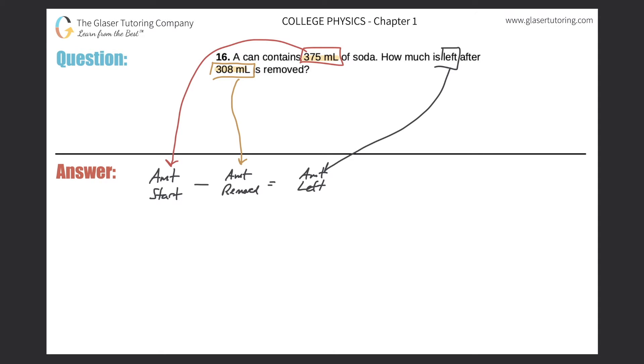So that's the question we're trying to solve. Let's plug in the numbers: 375 milliliters minus 308 milliliters. Just plug it into your calculator. 375 minus 308 comes out to 67 milliliters, and that would be the final answer.